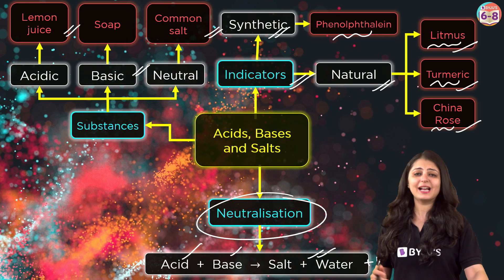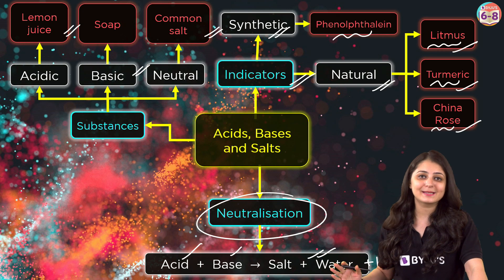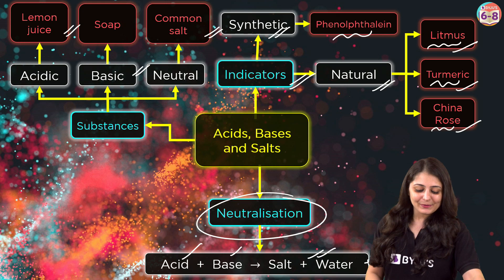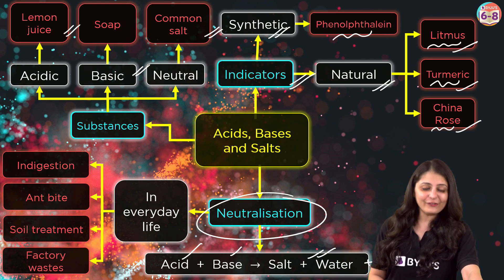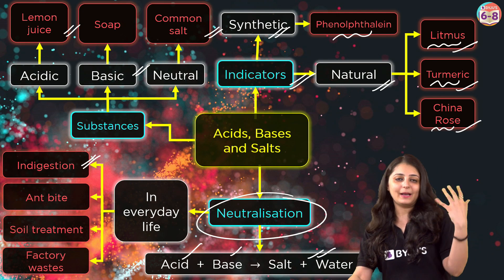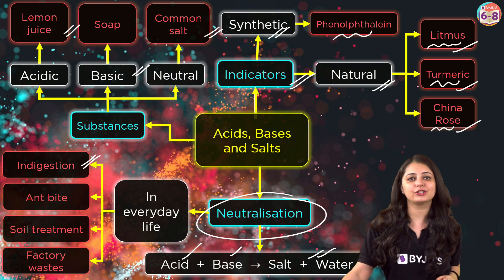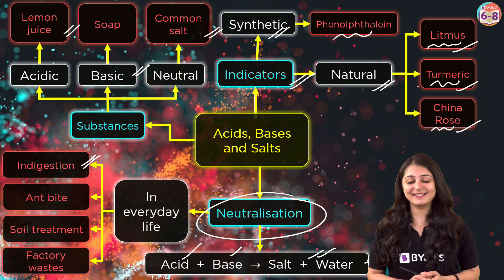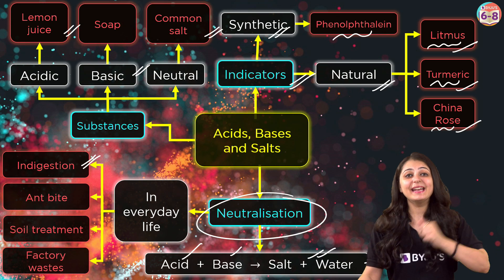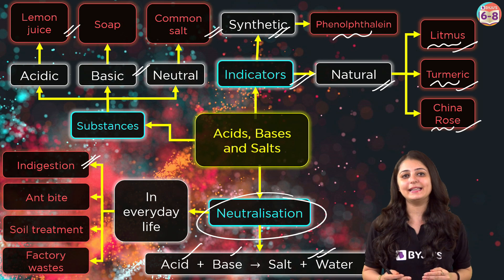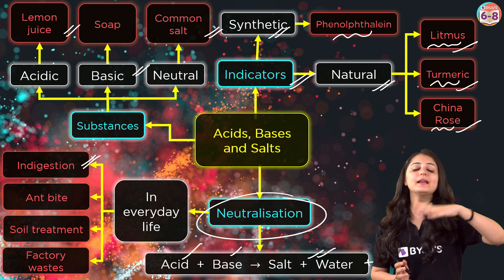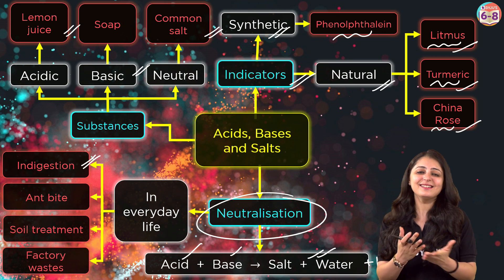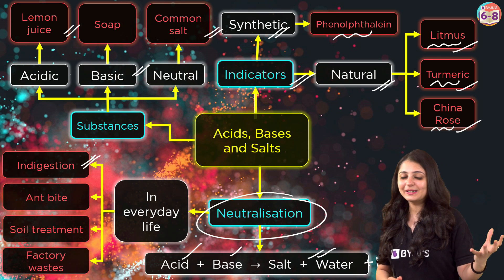Neutralization is happening all around us on a daily basis. For example, indigestion — our stomach produces hydrochloric acid which helps in digestion, but sometimes it releases too much acid, leading to indigestion or hyperacidity. We neutralize this by taking basic substances called antacids, such as milk of magnesia, which is magnesium hydroxide.